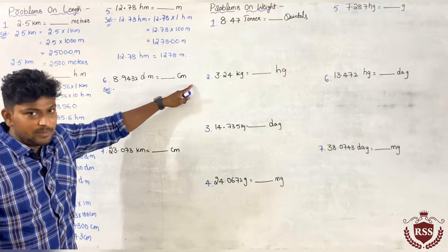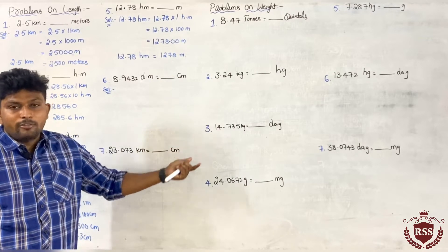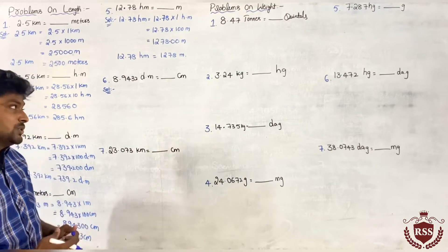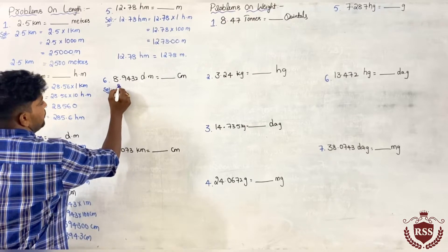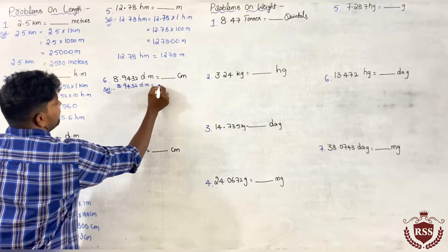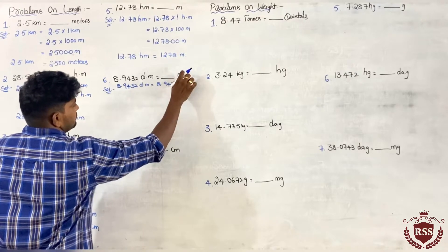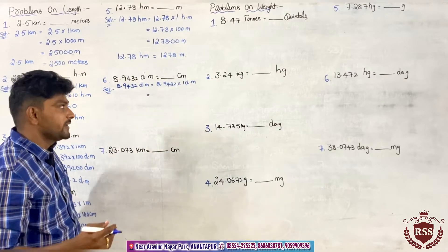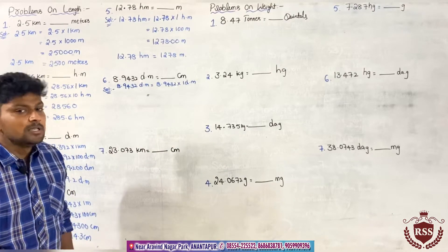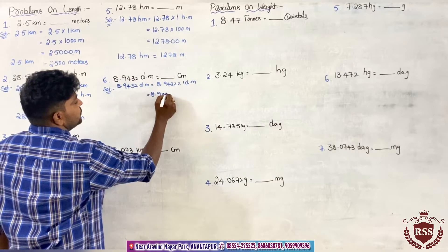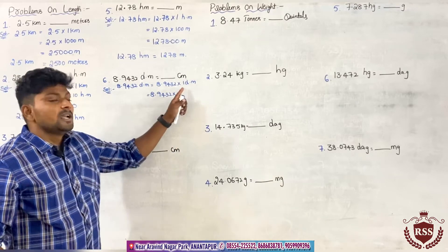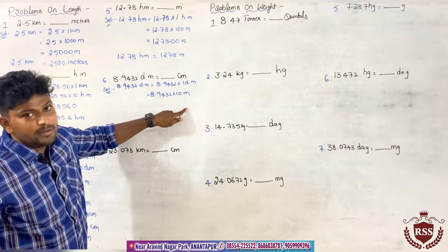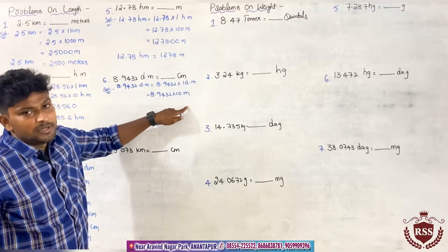Now decameters have to be converted into centimeters — a very important question. We do not have a direct conversion from decameters to centimeters. That is why first we convert decameters into meters, and then meters into centimeters — two steps. So 8.9432 decameters equals 8.9432 into 1 decameter. 1 decameter equals 10 meters.